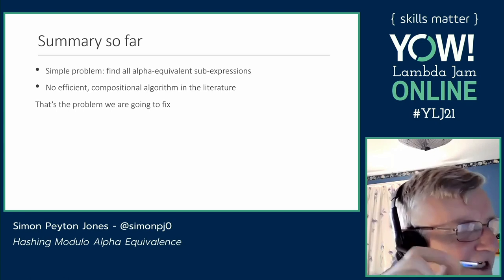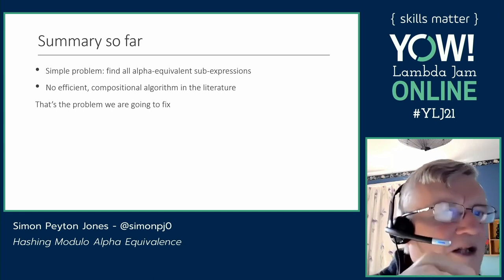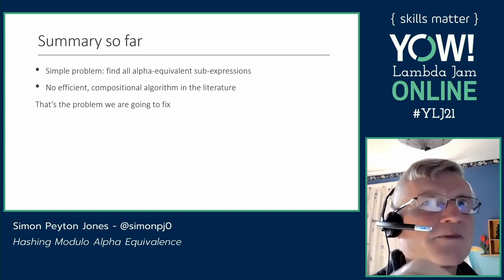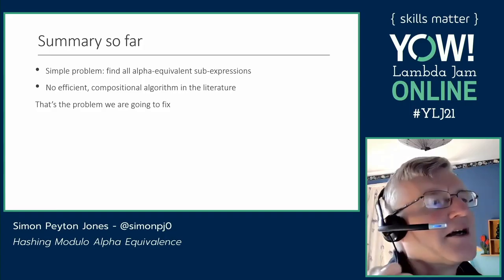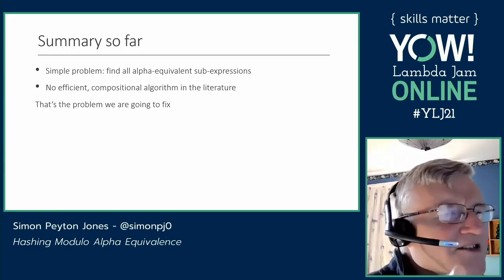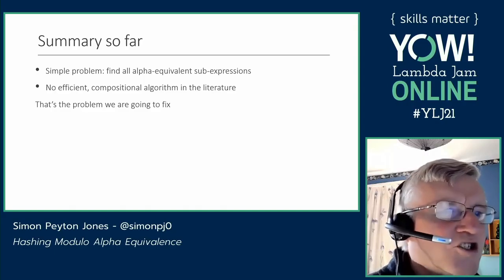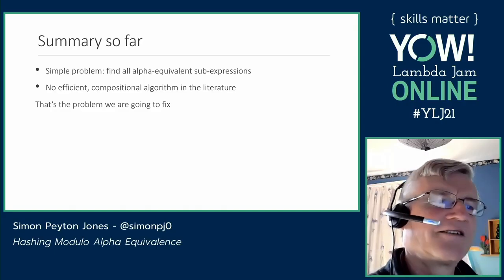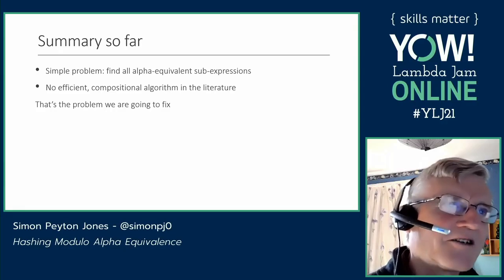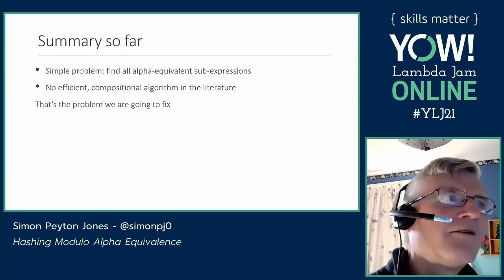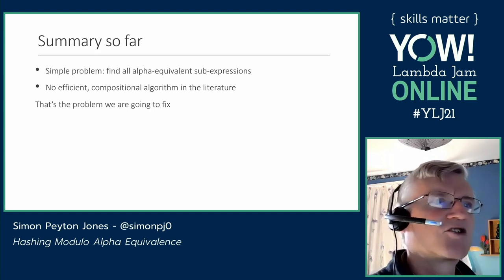The point I want to get to so far: this is a relatively simple-sounding problem — find all alpha-equivalent sub-expressions in a perhaps large program term. But unfortunately there doesn't seem to be an efficient compositional algorithm in the literature, and that's really surprising. I looked quite hard. If you know of any, please tell me. That's the problem we're going to fix in this talk.